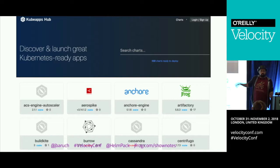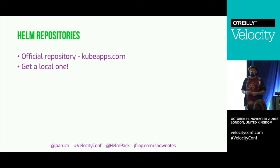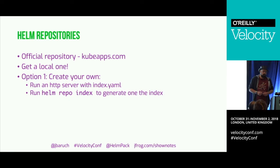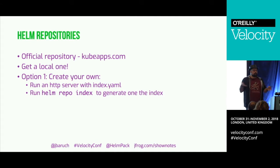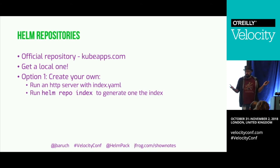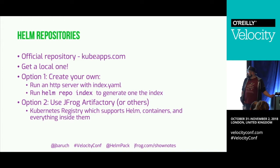You can go to kubeapps.com for search or use 'helm search'. You can and should also get a local repository. There are options like Chart Museum, or you can create your own — the simplicity of Helm is your friend here. All you need is an HTTP server that exposes an index.yaml file with the zip files in the root. Every time you have changes, run 'helm repo index' to regenerate the index.